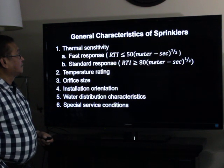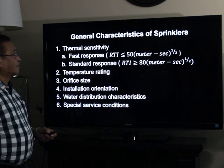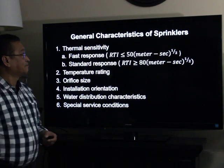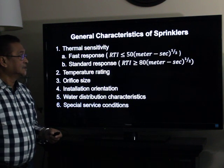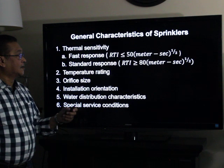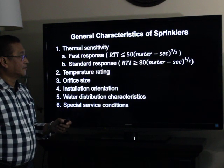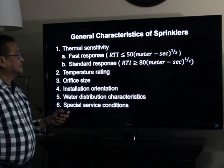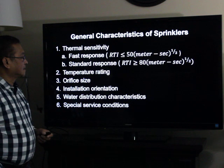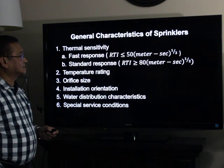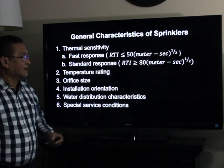General characteristics of sprinklers: number one is thermal sensitivity, with two classifications. The fast response has an RTI — Response Time Index — of 50 meter-second to the one-half or less. The standard response has an RTI of greater than or equal to 80 meter-second to the one-half.